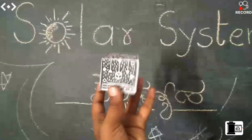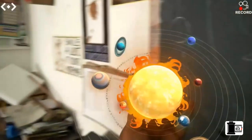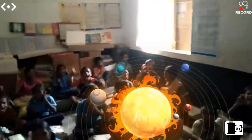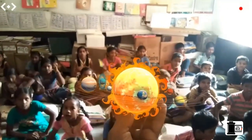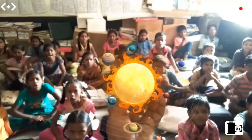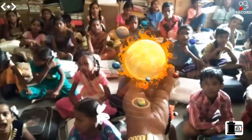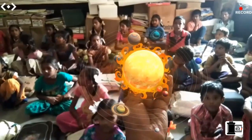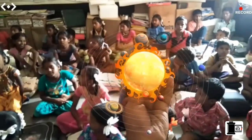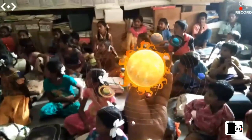The kids are shown the solar system AR display and are asked questions about the planets. They enthusiastically name the planets in their local language, identifying Earth, the Sun, and listing planets including Uranus and Neptune. Very good!